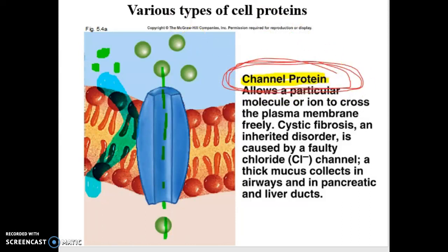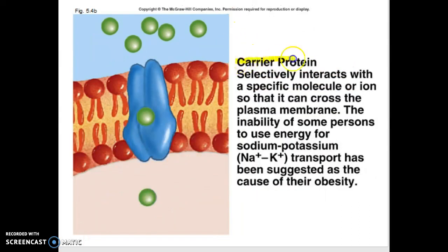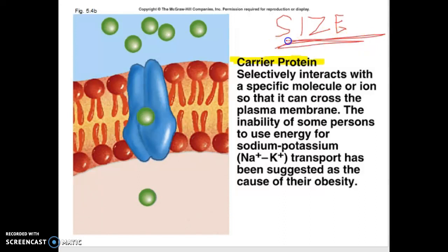That's just one type of protein associated with the cell membrane. Another one is called a carrier protein. Carrier proteins allow molecules to move in and out, but they don't simply diffuse — it takes a little effort. Carrier proteins are selective; they interact with specific molecules, allowing them to cross the membrane. Size is still an important issue when talking about movement through the membrane.